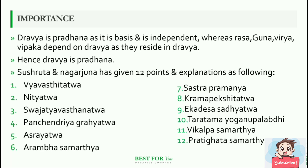Shushruta and Nagarjuna have given 12 points and explanations as follows: Vyavastitattva, Nityatva, Vajatya Vastanatva, Panchendriya Grahyatva, Ashrayatva, Arambha Samarthya, Shastra Pramanya, Kramapekshi Tattva, Ekadesha Sadhyatva, Taratama Yoga Upalabdhi, Vikalpa Samarthya, and Pratighata Samarthya.